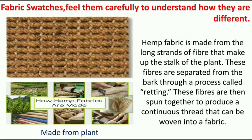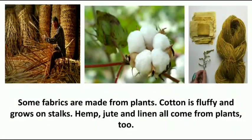Feel the fabric swatches carefully to understand how they are different. Hemp fabric is made from the long strands of fiber that make up the stalk of the plant. These fibers are separated from the bark through a process called retting, then spun together to produce a continuous thread that can be woven into a fabric. Some fabrics are made from plants — cotton is fluffy and grows on stalks. Hemp, jute, and linen all come from plants too.